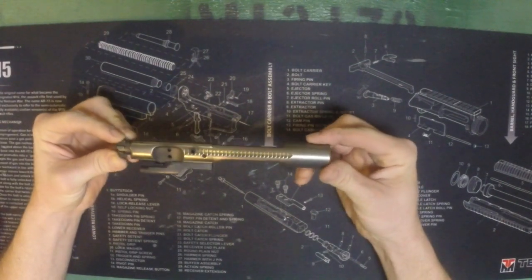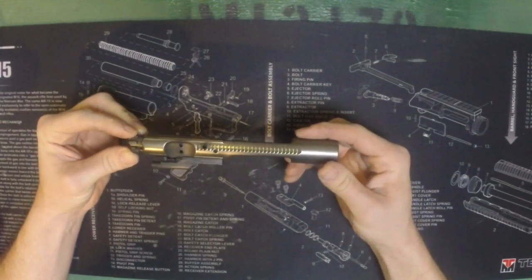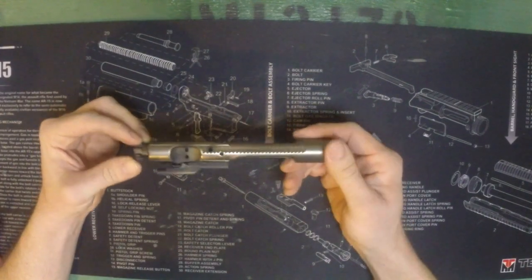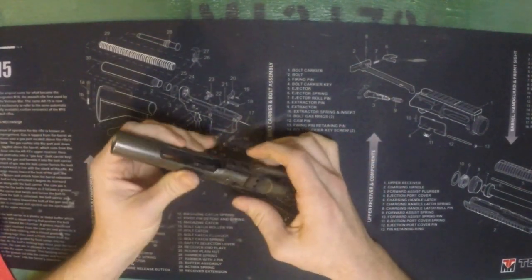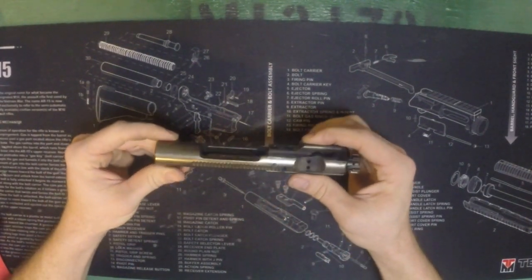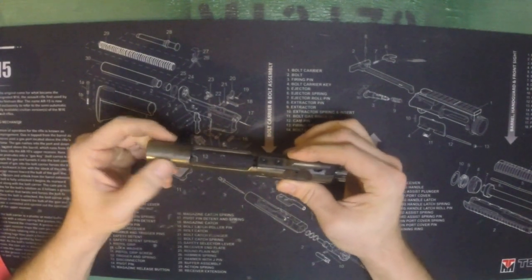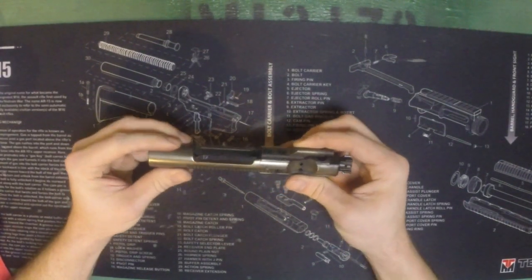I got this nickel boron bolt carrier group from my AR-15 and I'm extremely happy with it. However, something they don't tell you when you buy a nickel boron bolt carrier group is that it dulls, it oxidizes.